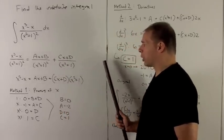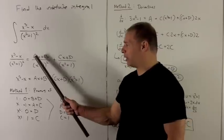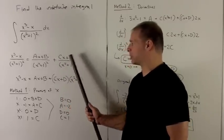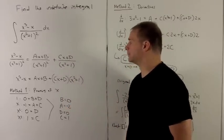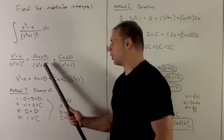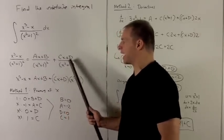And then on top we'll have our ax plus b, cx plus d, and so on. Since I only have a square here, we'll only need two terms on this side.